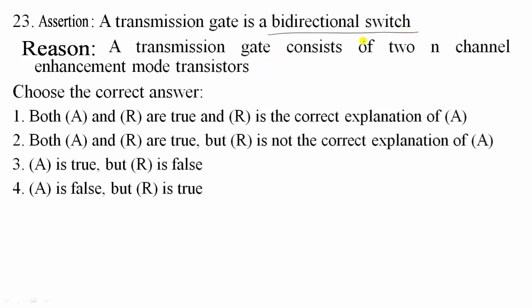Question 23: A transmission gate is a bi-directional switch — this assertion is true. However, the statement that it consists of two N-channel enhancement mode transistors is wrong. A transmission gate uses PMOS and NMOS transistors connected in parallel. So option 3 is correct: assertion is true but reason is false.